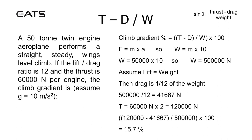The climb gradient as a percentage equals thrust minus drag divided by weight, multiplied by 100. And force equals mass times acceleration. To calculate weight, we use the mass and multiply by 10. The mass is 50,000 kg (50 tonnes), so the weight is 500,000 newtons.